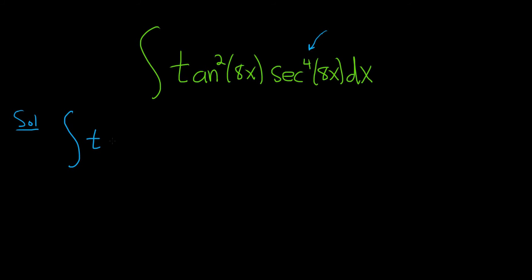So this is tan squared of 8x, and then we're saving a secant squared. So this will be secant squared of 8x times secant squared of 8x. By save a secant squared, I mean bring it over here with the dx. Secant squared times secant squared is secant to the 4th, so everything is still okay.